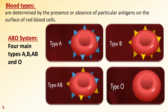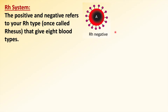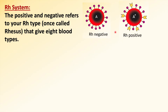We still have another type of antigen that is really important — the RH antigen. Under the RH system, if we lack this antigen, the blood type is negative. But if we have it, the blood type is positive.